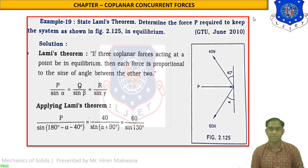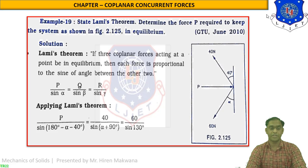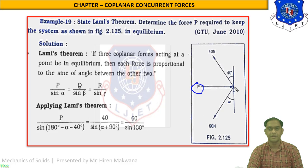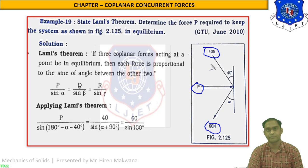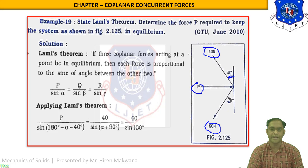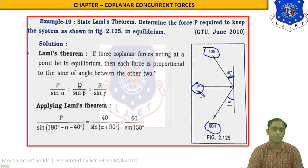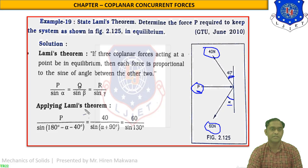We have already proved this equation in earlier lectures. According to the figure, we need to find unknown force P. The force P is compressive at this point. The other two forces, 60 Newton and 40 Newton, are both tensile. These two forces make an angle of 40 degrees and alpha with the vertical as shown in the figure. So both alpha and P are unknown, and we have to find both P and alpha using Lame's theorem.